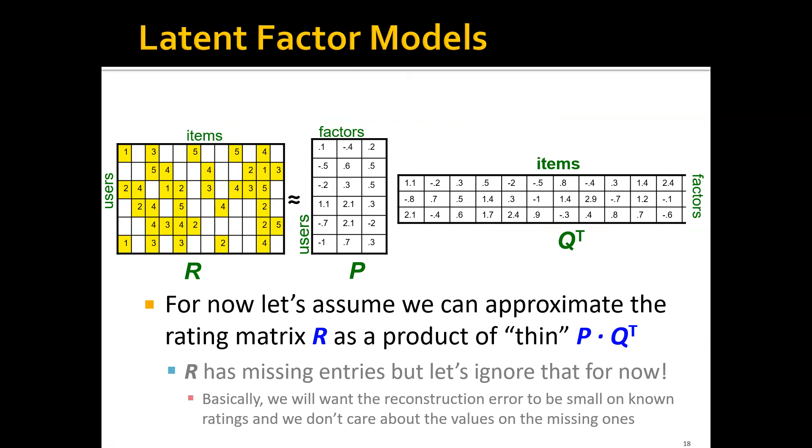More concretely, the latent factor model will try to factorize this whole rating matrix into two smaller matrices: the user matrix and the item matrix. For example, this user matrix P, each row represents the factors for a user. This first row is the factors for user one, and these three dimensions represent the strength or relevance of this user in this specific factor. For now, let's assume we can approximate this rating matrix as the product of these two thin matrices P and Q.